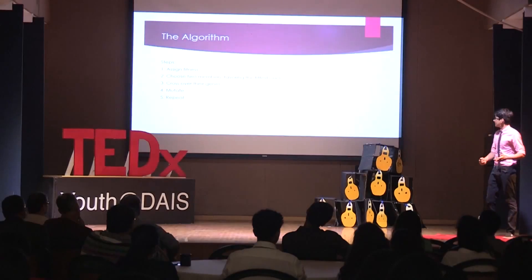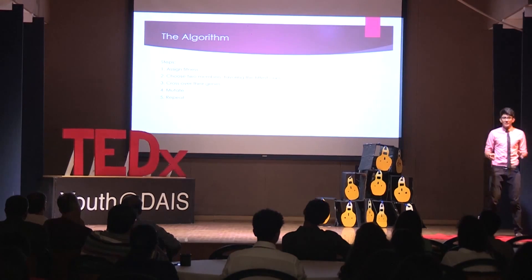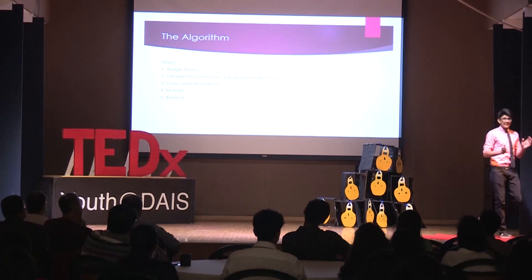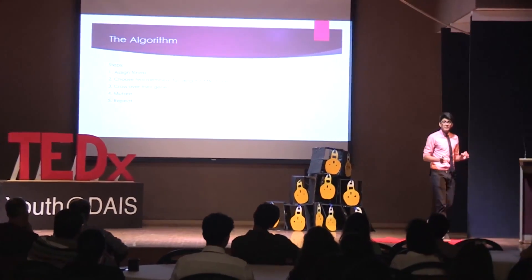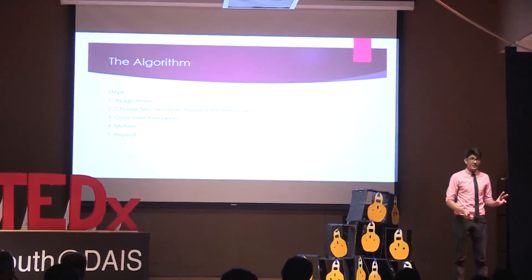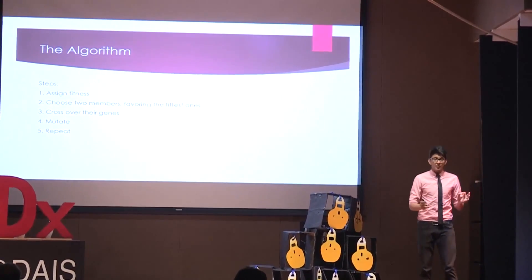Now let me tell you a bit about the algorithm. There are five basic steps. First, you initialize a population of chromosomes that are randomly generated. Then, you assign a fitness score to each chromosome based on its ability to solve the given problem at hand. After that, we select two members, favoring the fittest ones. Next, we recombine the genes of the two selected parents by crossing over their chromosomes at a randomly selected point.